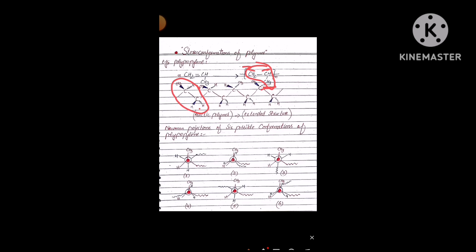This overall chain is a polymer chain named polypropylene, and it is an atactic polymer. Atactic means there is no regular arrangement of the substituents. Here CH₃ is above the plane, then above the plane again, then below the plane, then above again — there is no regular sequence of attachment of the substituent group.